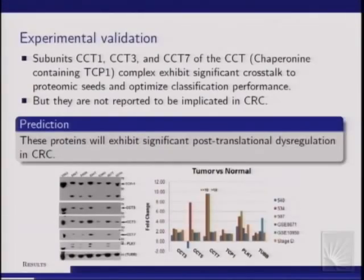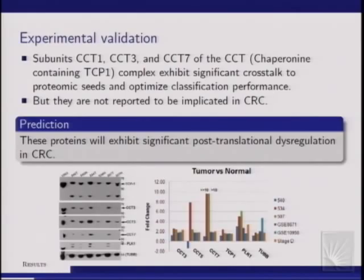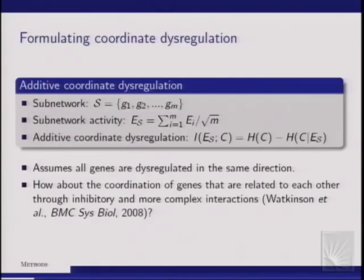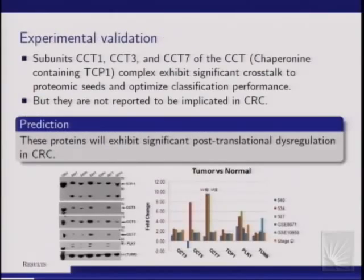We further experimentally validated this approach by identifying proteins flagged as significant cross-talkers with proteomic seeds that were also in coordinately dysregulated subnetworks. We predicted these particular proteins would also exhibit significant post-translational dysregulation. Indeed, Western blots showed that they are dysregulated more significantly at the protein level compared to the mRNA level.